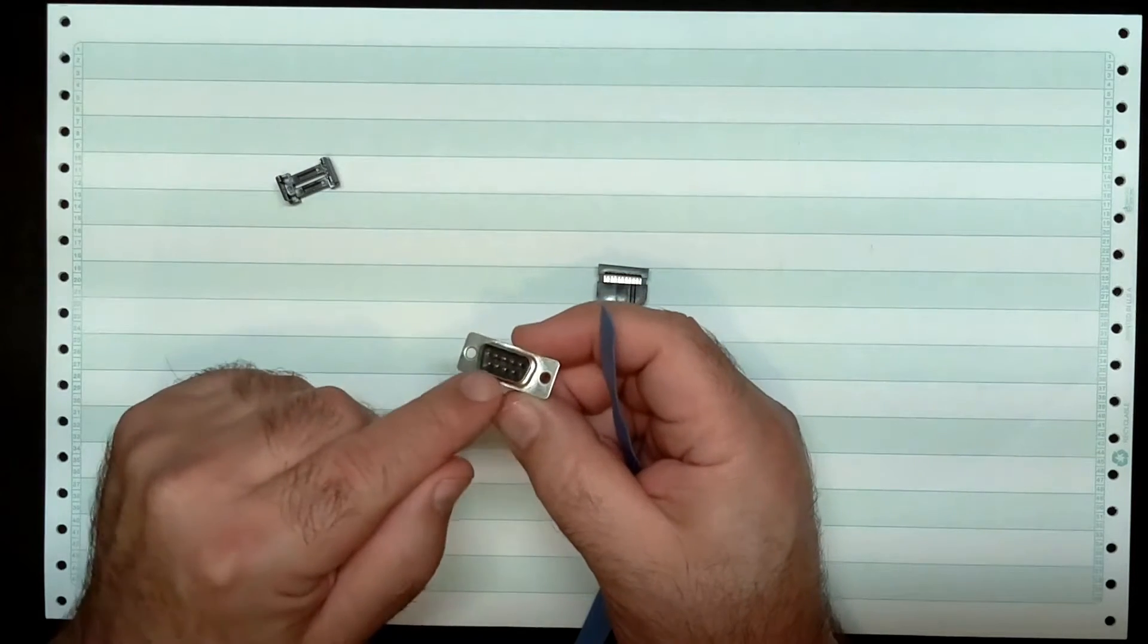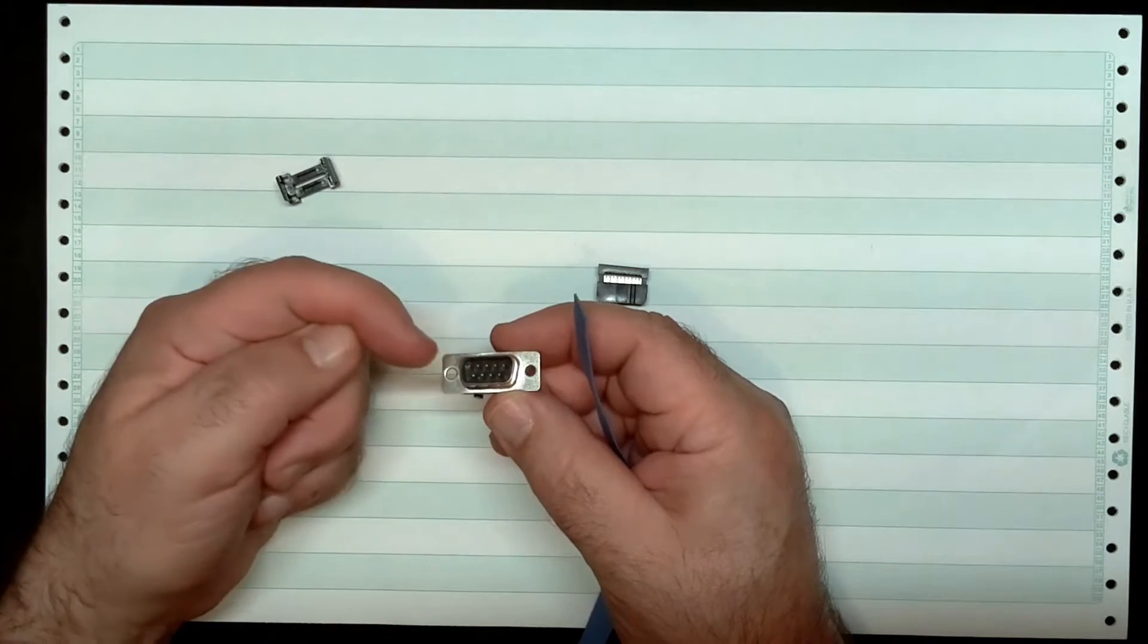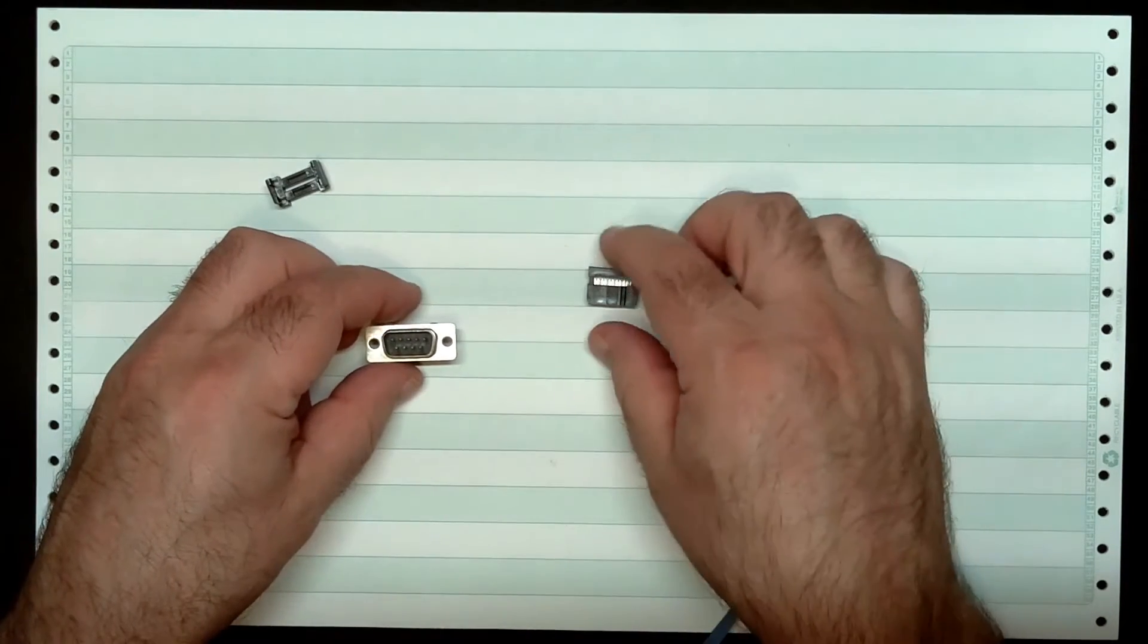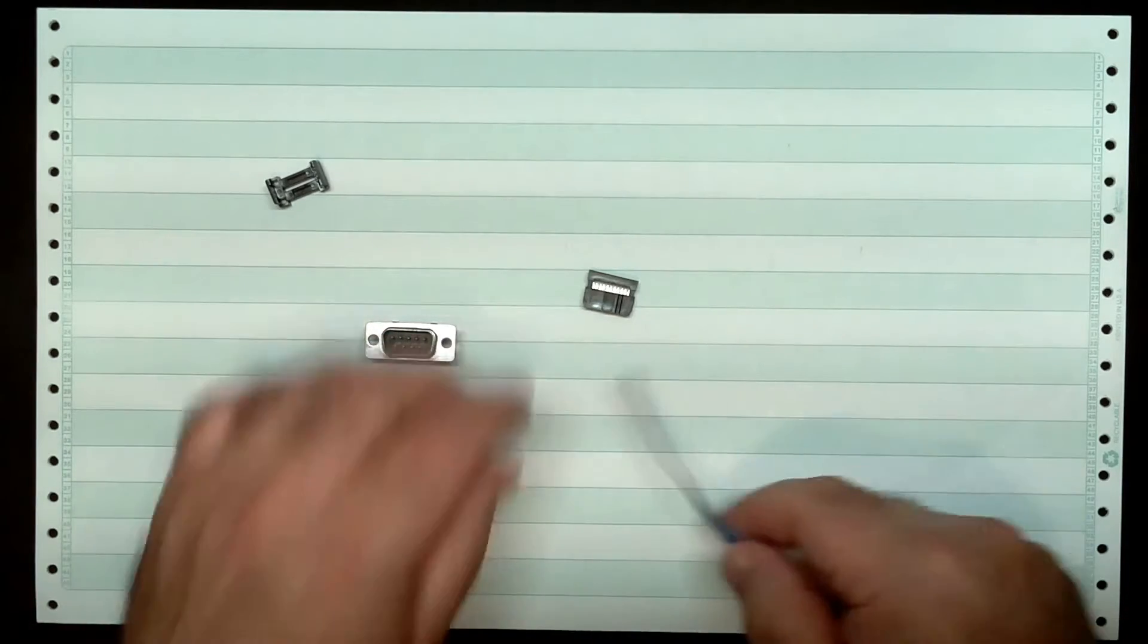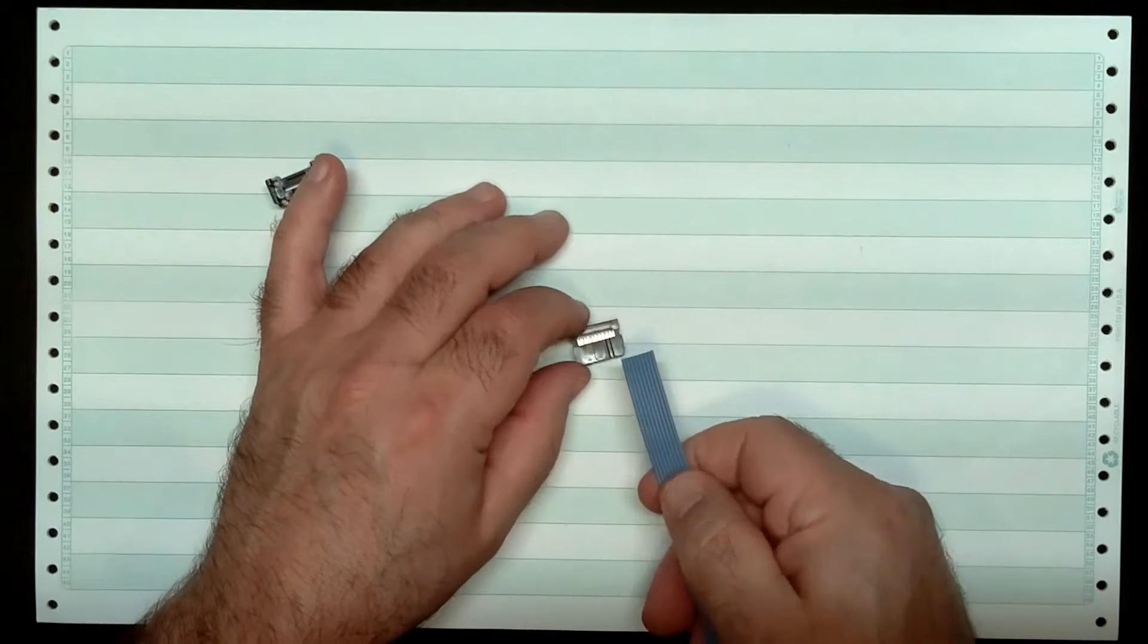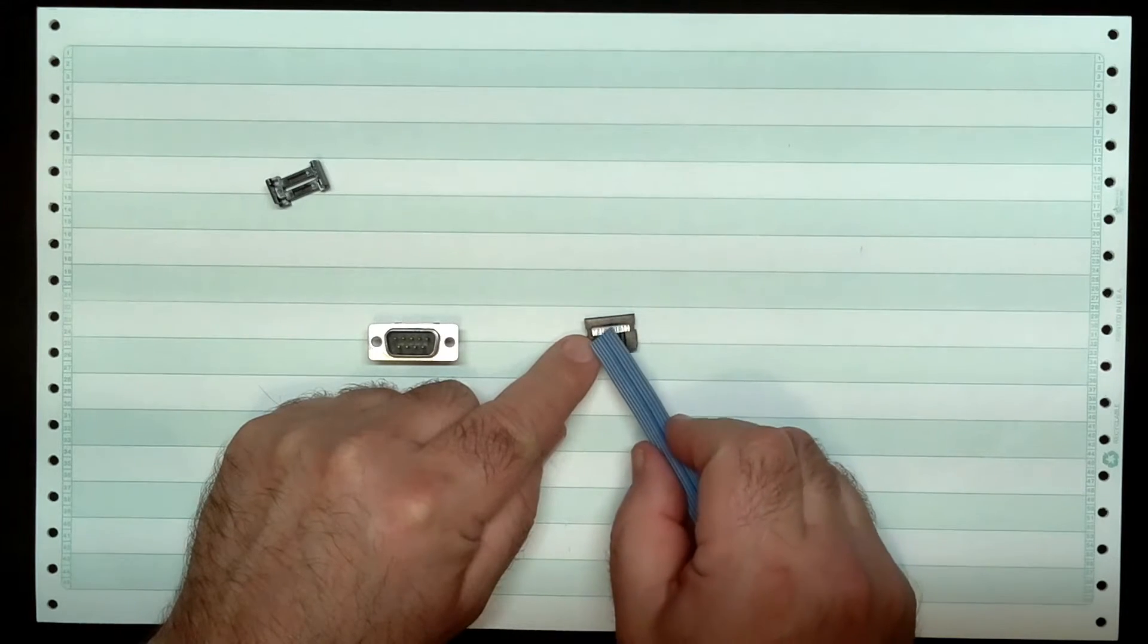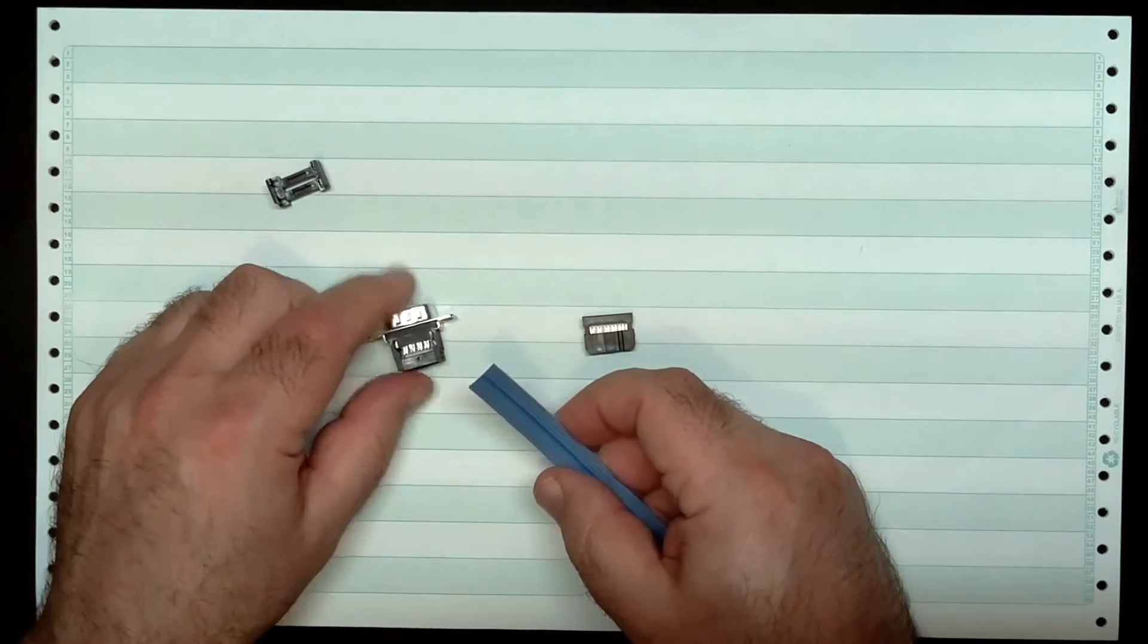Now on a DB9, when you're looking at the male end, the pin sticking up, pin one is over here. So the key here is to make sure that when I connect this connector here with the cable, and then the cable is going to run around, and then the other end of the cable will go into this guy. I need to make sure that pin one on this connector connects to pin one on this one. In other words, don't flip the cable over by mistake. So you got to pay attention to which way to put the cable in these. That's all I'm saying.